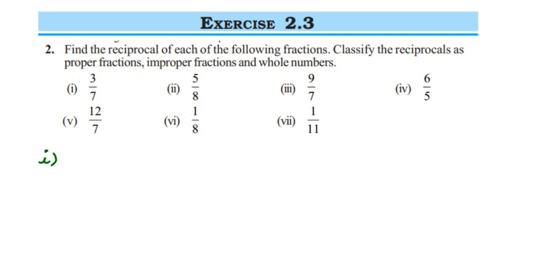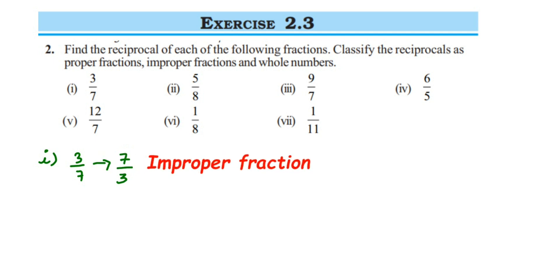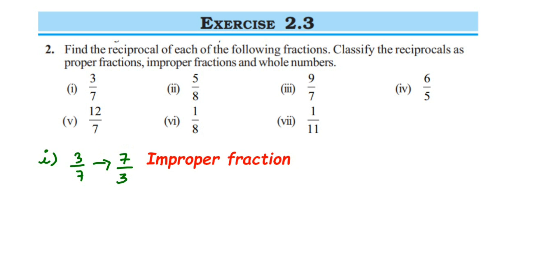The reciprocal of a number is found by interchanging the numerator and denominator. For example, 3 by 7 — its reciprocal will be 7 by 3. You just interchange 3 and 7. After finding the reciprocal by interchanging the numerator and denominator, we have to classify it as a proper fraction, improper fraction, or whole number.